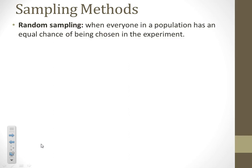Here are some options. Random sampling means everybody in the population has an equal chance of being chosen.